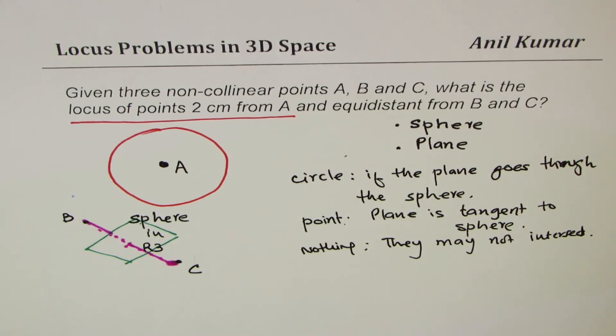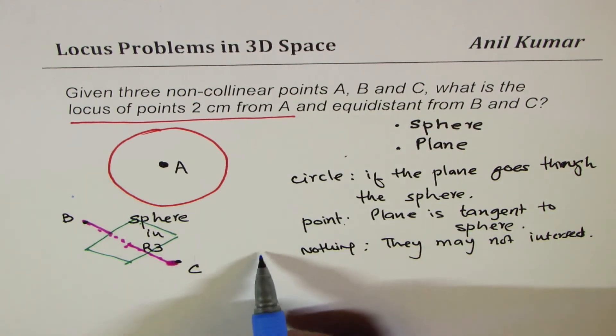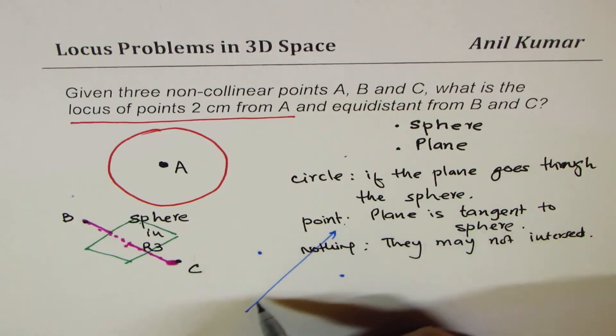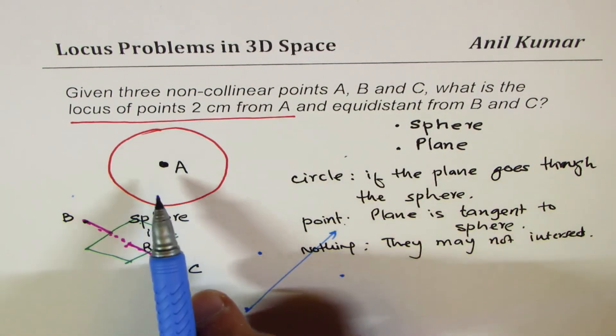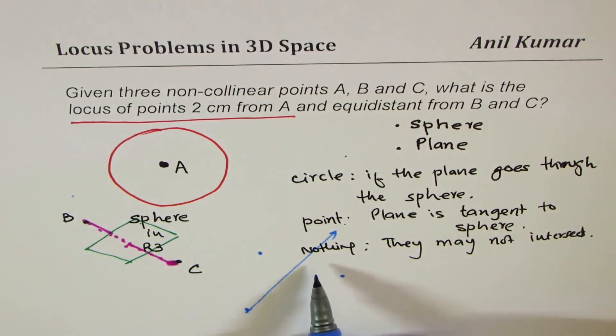So, if your points are, let us say, not placed like this, where they could go through it or could be tangent, let's say if the point B and C are away, in that case, the plane will be going far away from the 2 centimeter radius sphere. So, in that case, there will not be any point of intersection between the two, correct?